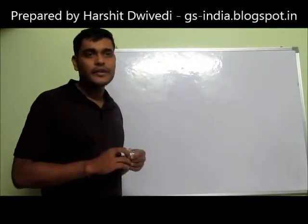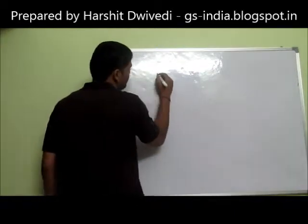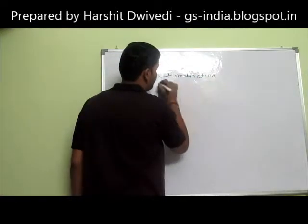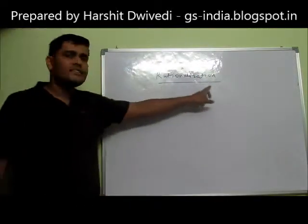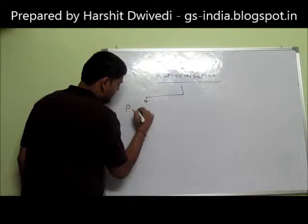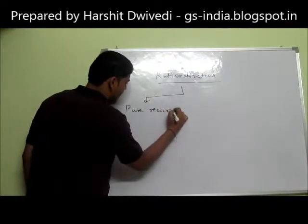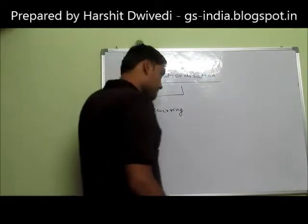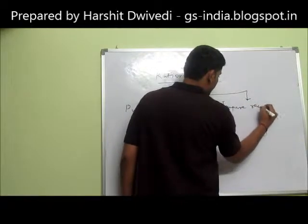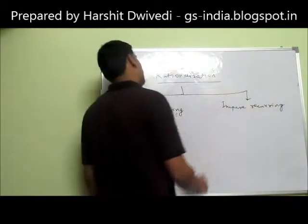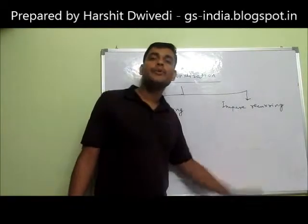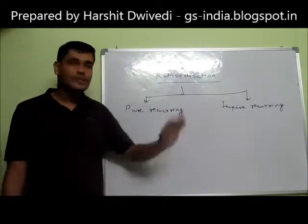Hi, welcome friends. In this class I will tell you about the Rationalization of Numbers. This topic will be covered under two heads: first will be the rationalization of pure recurring decimals, and second will be the rationalization of impure recurring decimals. In the last video I told you what pure recurring non-terminating decimals are and what impure recurring non-terminating decimals are.